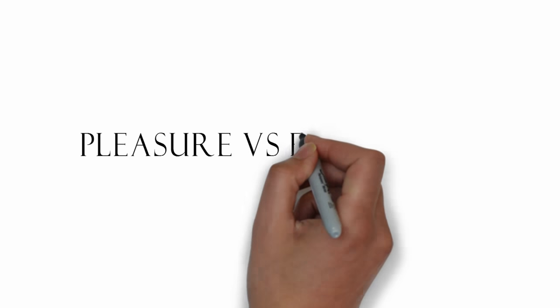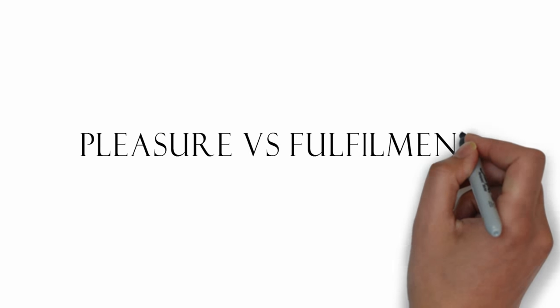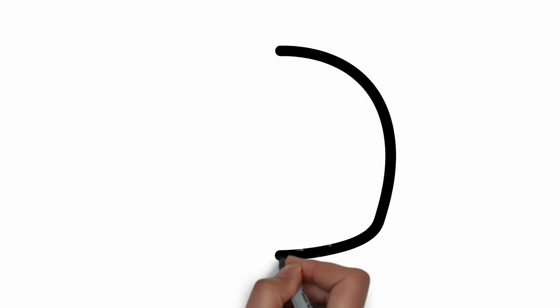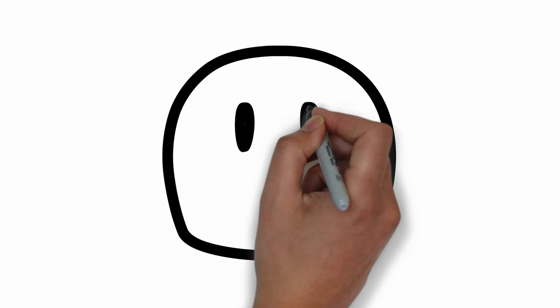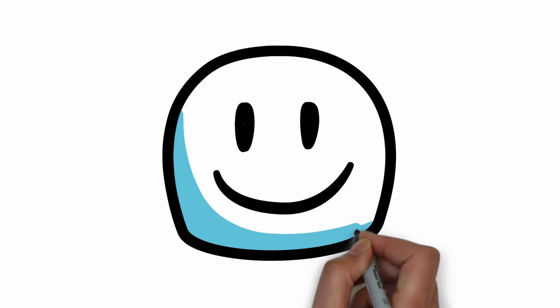Pleasure versus fulfillment - what is more important for your lasting happiness? Pleasurable things are easily recognized: things that make us feel good in the moment, that give us a sense of joy and euphoria.